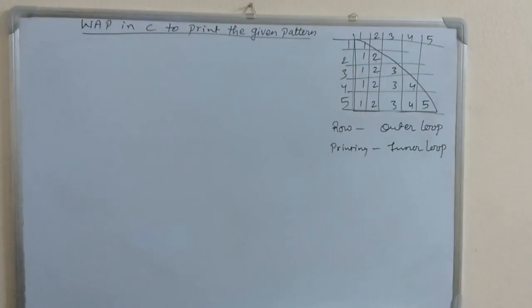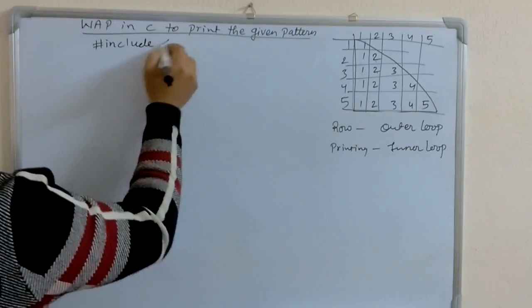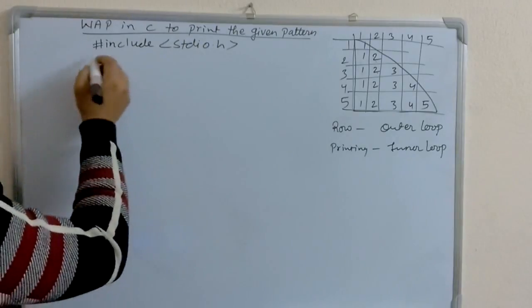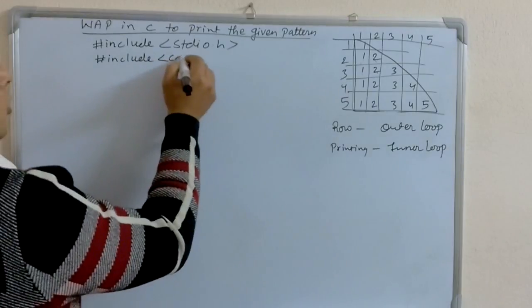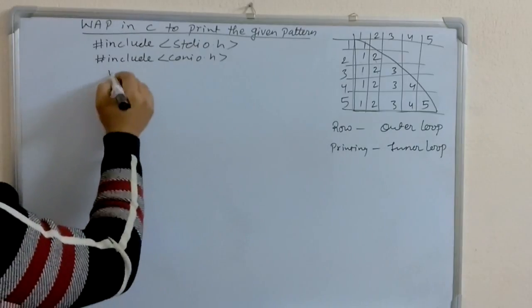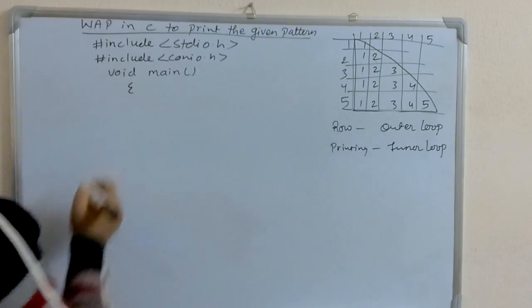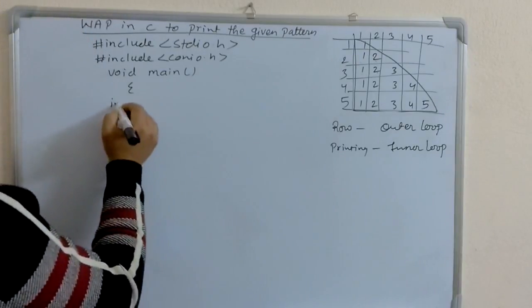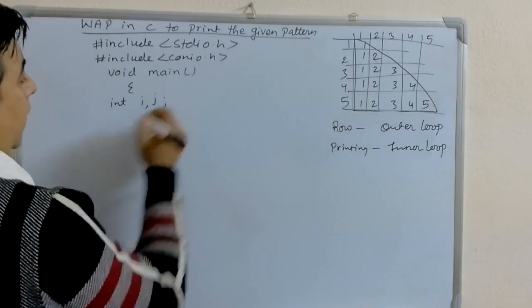Let's begin the program with the header file. #include stdio.h — stdio.h is used for standard input/output. The next header file is conio.h. Let's begin the main program: void main. After that, we have to declare the variables: i for the outer loop and j for the inner loop.